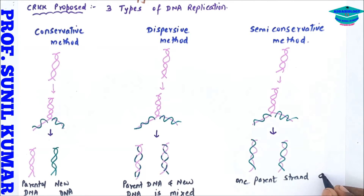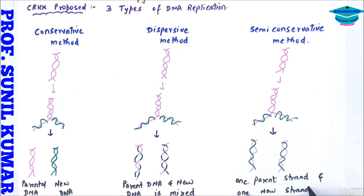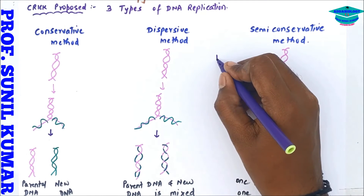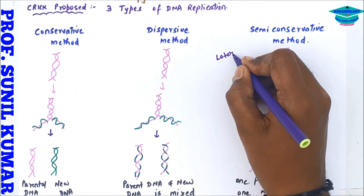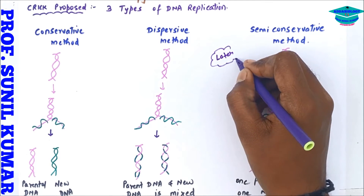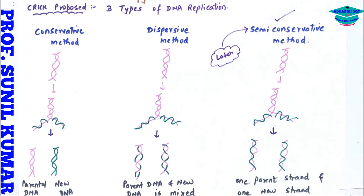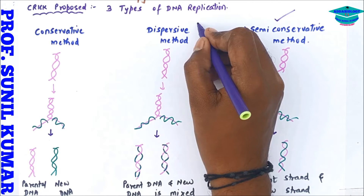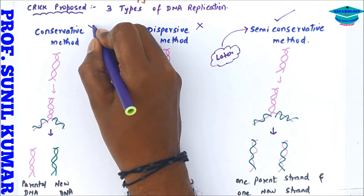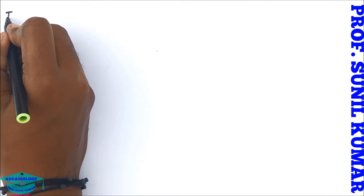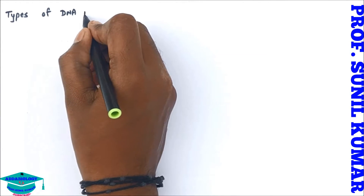50 percent of the DNA is parental. Studies confirmed that DNA replication is only of the semi-conservative type — the dispersive method and conservative method do not occur.